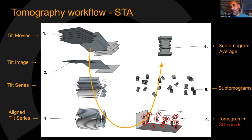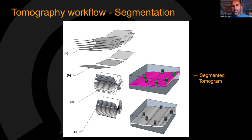There's a second workflow that doesn't go through subtomogram averaging. It uses the same first five steps — you still generate the tomogram — but then you segment the tomogram, trying to find semantic meaning in the signal and infer biological conclusions based on the location of your particles of interest within the tomogram.